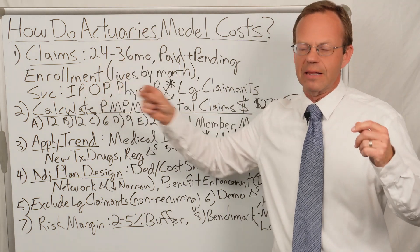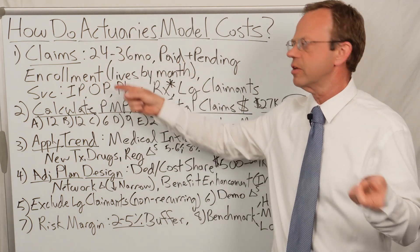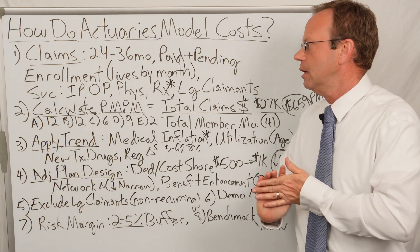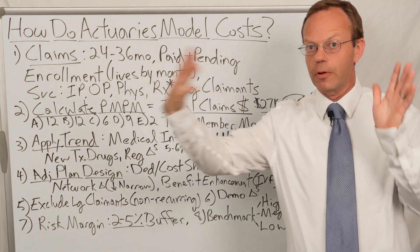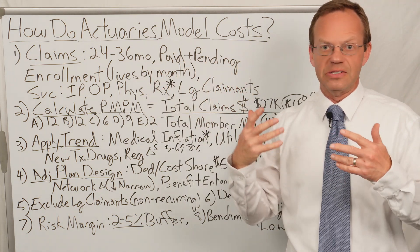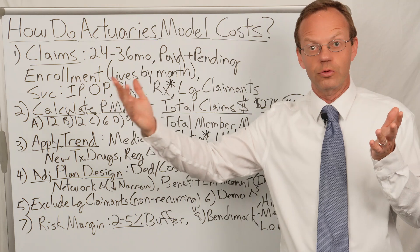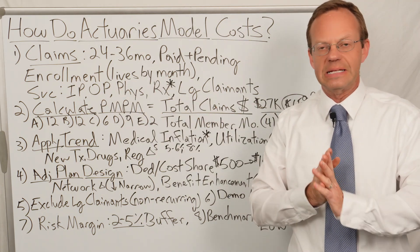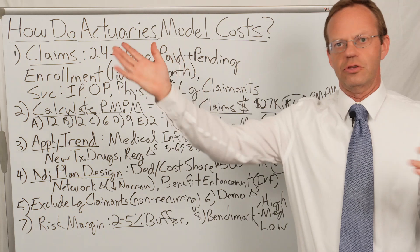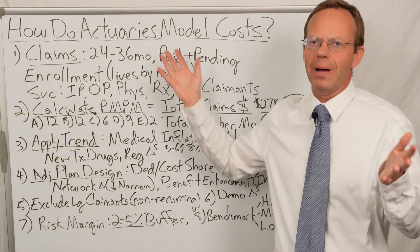They also need enrollment data. They need to know how many lives were on the plan by month for those 24 to 36 months of claims. That's important because some people will be on for all 12 months, but some people won't — for example, a baby born in June will only be on from June through December, or someone added during open enrollment might get fired or quit. So you have to have the enrollment by month.